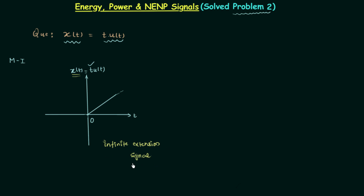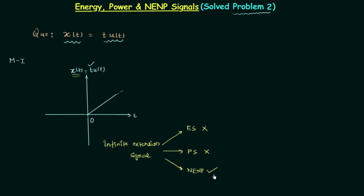Since the signal is an infinite extension signal, there are three possibilities: energy signal, power signal, or neither energy nor power signal. To differentiate, we focus on the amplitude. When amplitude is decreasing, it is an energy signal — but here it is increasing, so it is not an energy signal. When amplitude is neither decreasing nor increasing, it is a power signal — but here it is increasing, so it is not a power signal. Thus the signal is neither energy nor power signal.